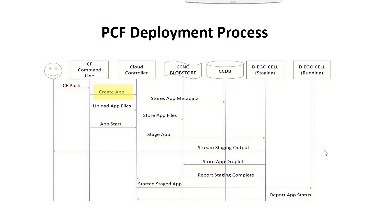The first one is create app. The create app is not an application creation command — it is a command to store the metadata of the application to the database. When we push the application we include the manifest file which defines the application metadata: how much memory you need, what is the name of the application, how many instances you want. That whole metadata information will be stored into the cloud controller database.